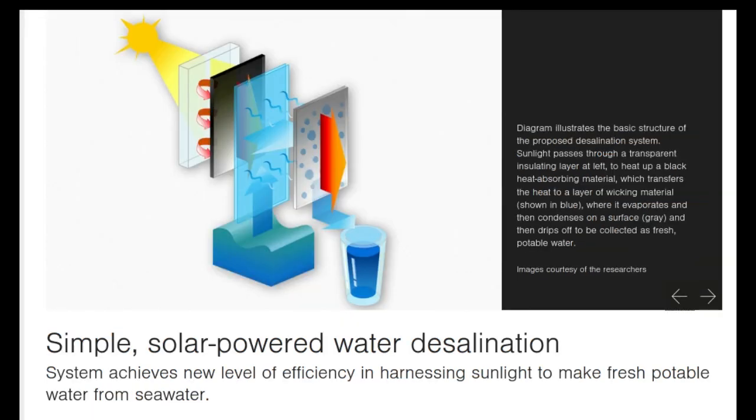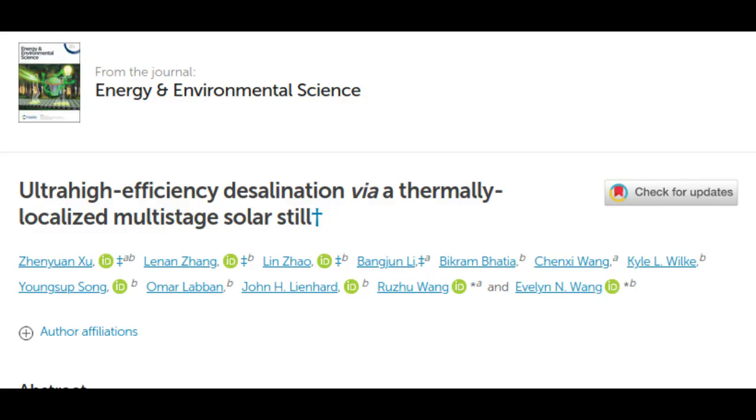The system uses multiple layers of flat solar evaporators and condensers lined up in a vertical array and topped with transparent aerogel insulation. It is described in a paper appearing in the journal Energy and Environmental Science.